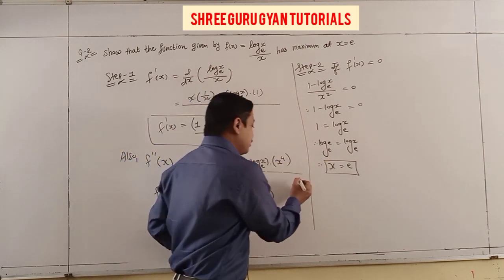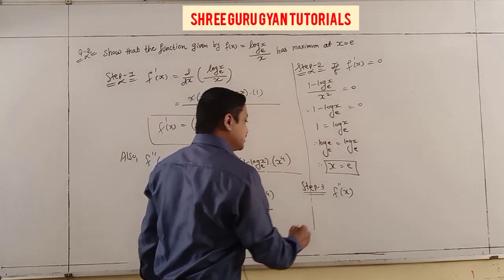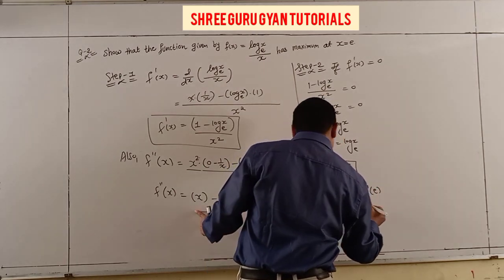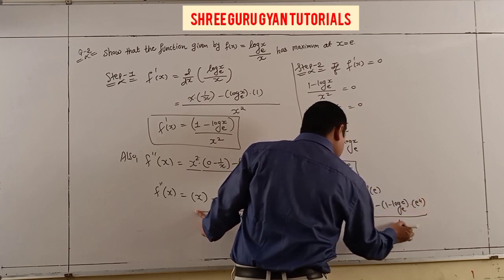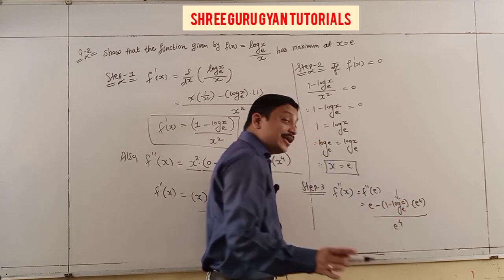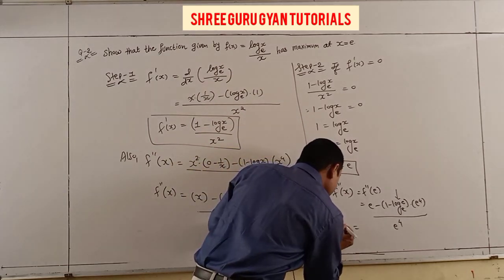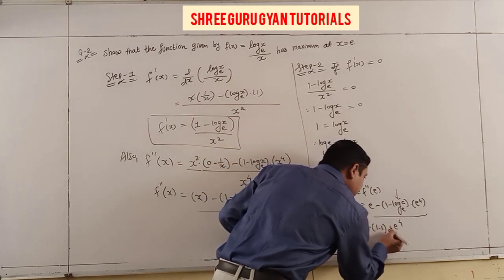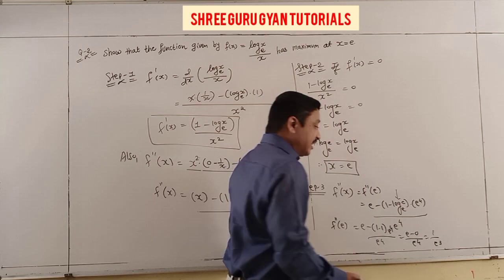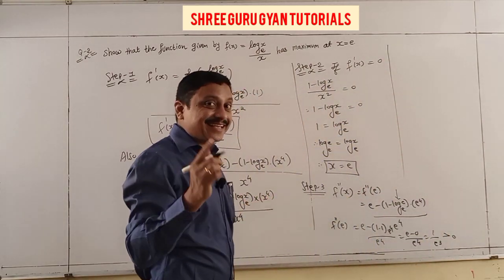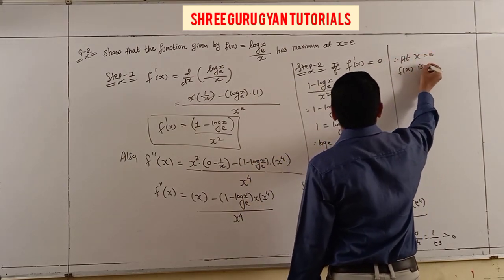Our target is to show maximum at x = e. So I check f''(e). Substituting x = e into f''(x): numerator becomes e·(-1/e) - (1 - log_e e)·2e·... Since log_e(e) = 1, we get 1 - 1 = 0, leaving -e/e⁴ = -1/e³.